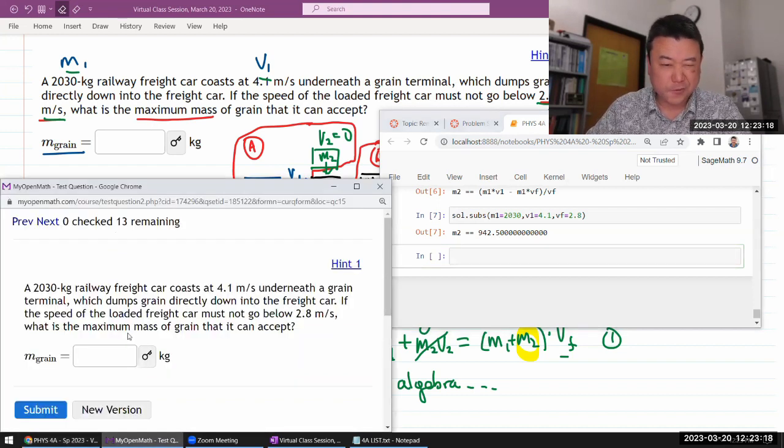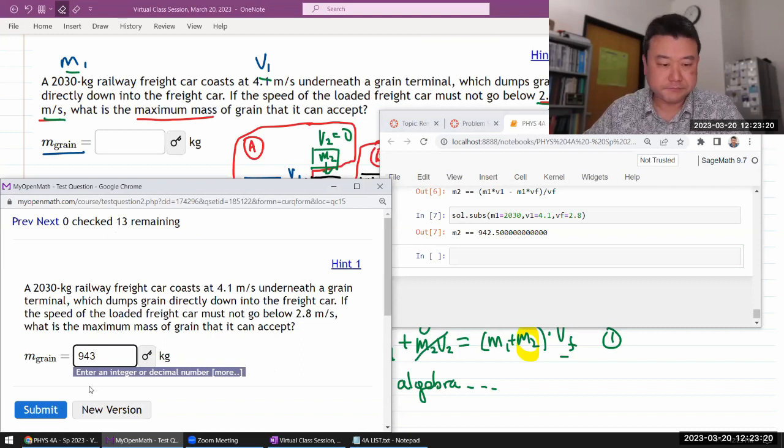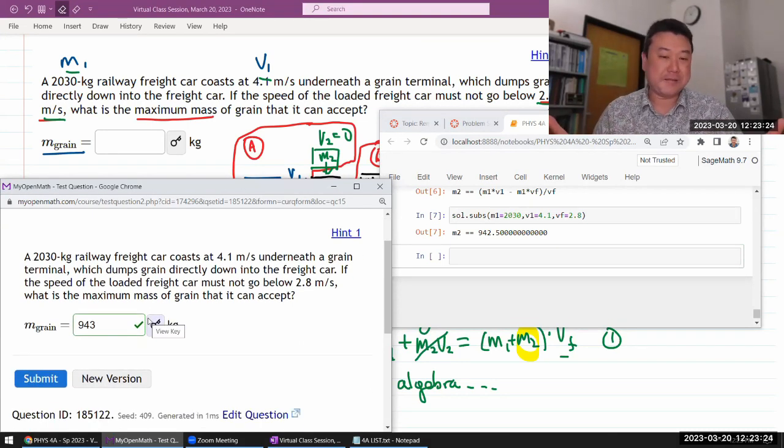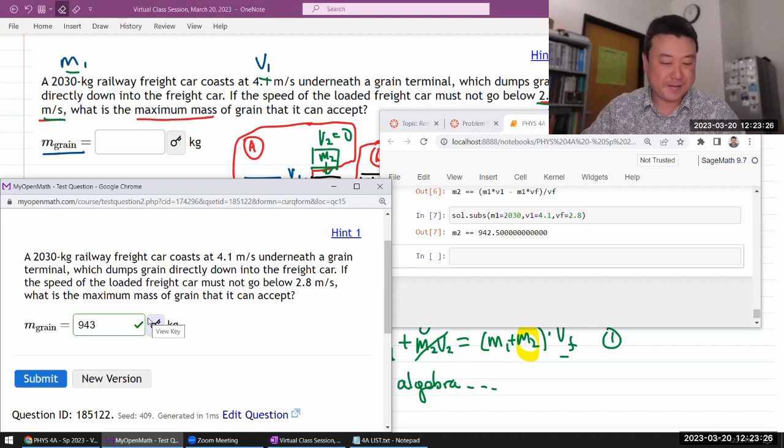So 943, well done. Good. That's it. Not that hard. Here, I'll just say, computer algebra system.